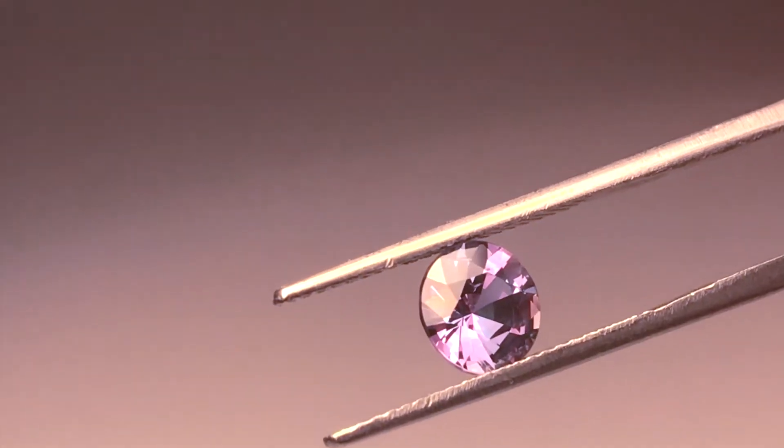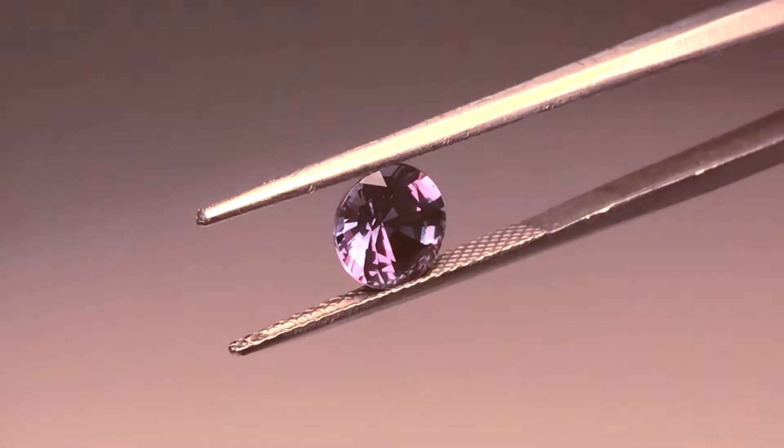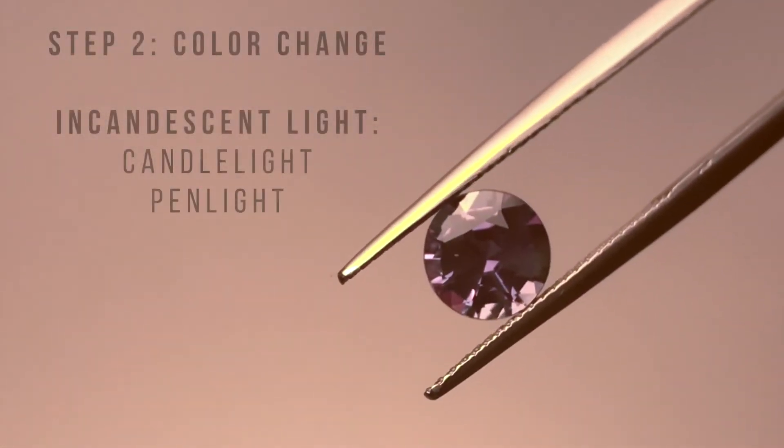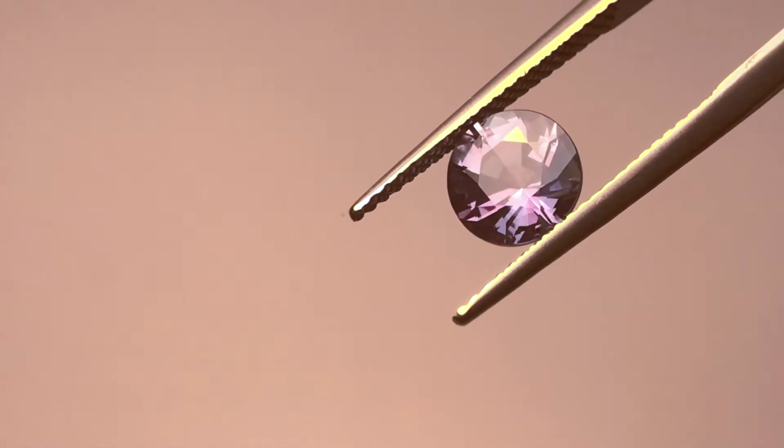In order to see the color change, the stone now has to be presented under incandescent light. Incandescent light, candle, or pen light, is the equivalent of 3600 Kelvin.